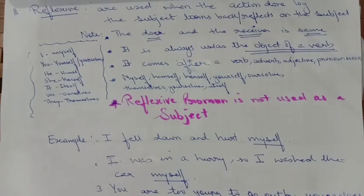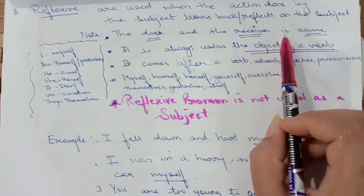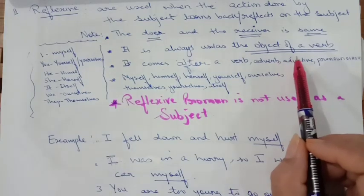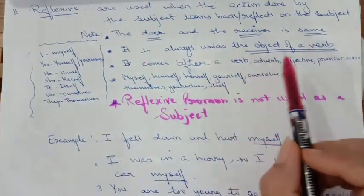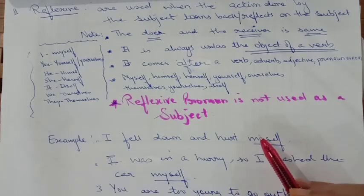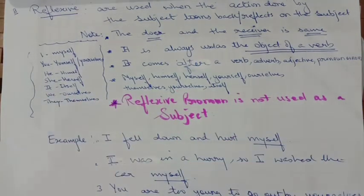Reflexive pronouns are used when the action done by the subject turns back or reflects back on the subject. The doer and the receiver are the same. It is always used as the object of a verb — it comes after a verb, and sometimes after a preposition, an adjective, a pronoun, or a noun. Myself, himself, herself, yourself, ourselves, themselves, yourselves, itself — these are all your reflexive pronouns.